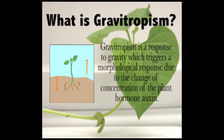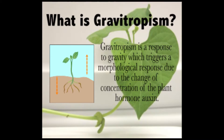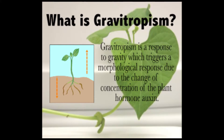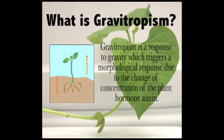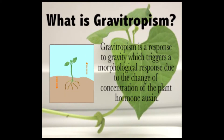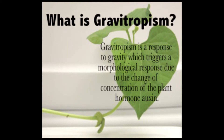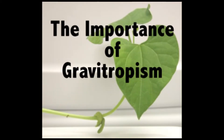Auxin is transported into the nucleus of the growth cells of the shoot and roots by the endoplasmic reticulum, where it alters gene transcription. It does this by acting like molecular glue that holds receptor proteins together. The transcription alteration thus encourages or reduces cell growth, resulting in the gravitropic responses of shoots and roots.